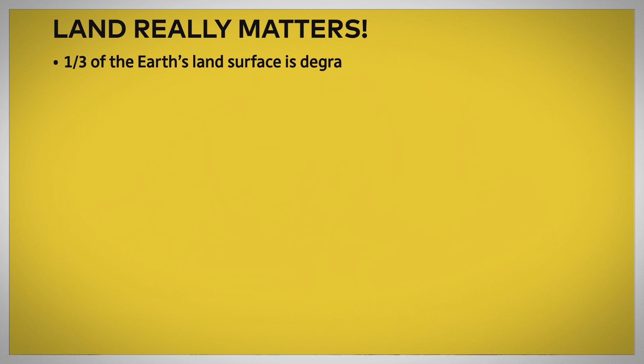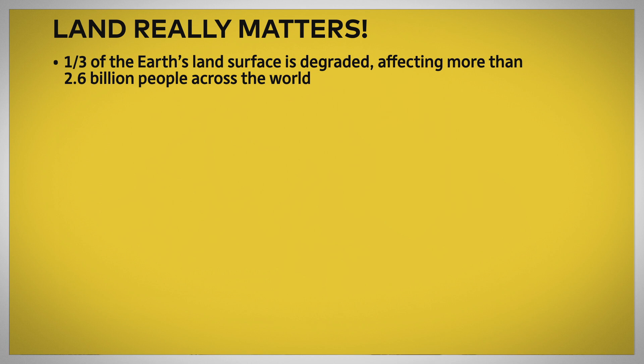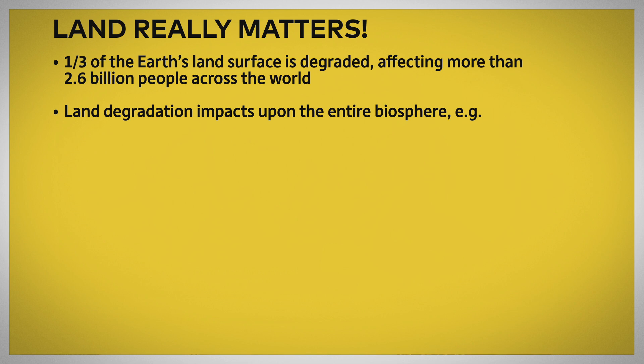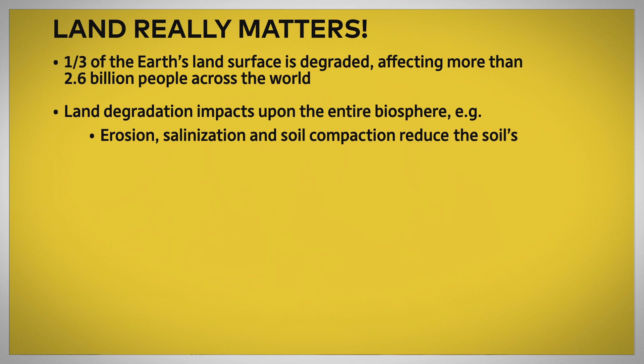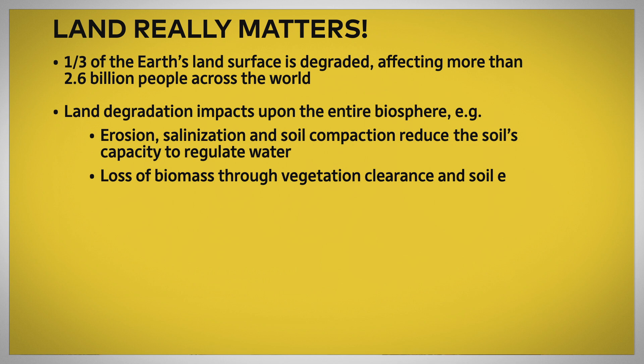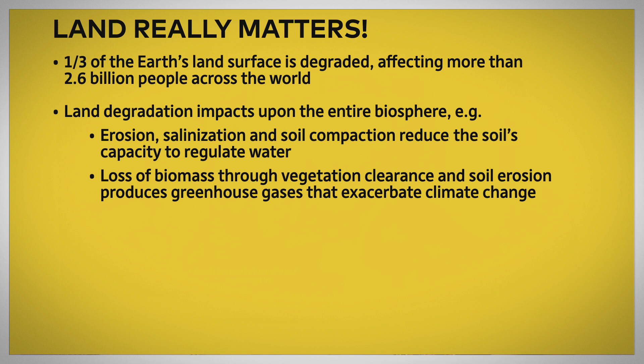Land really matters. A third of the earth's land surface is degraded, and this is affecting more than 2.6 billion people all around the world. Land degradation, although it occurs in a single spot somewhere on the planet, impacts upon the entire biosphere. Processes like erosion, salinisation, and soil compaction reduce the soil's capacity to regulate water. The loss of biomass through vegetation clearance and soil erosion also produces greenhouse gases that go up into the atmosphere and make processes of climate change worse.